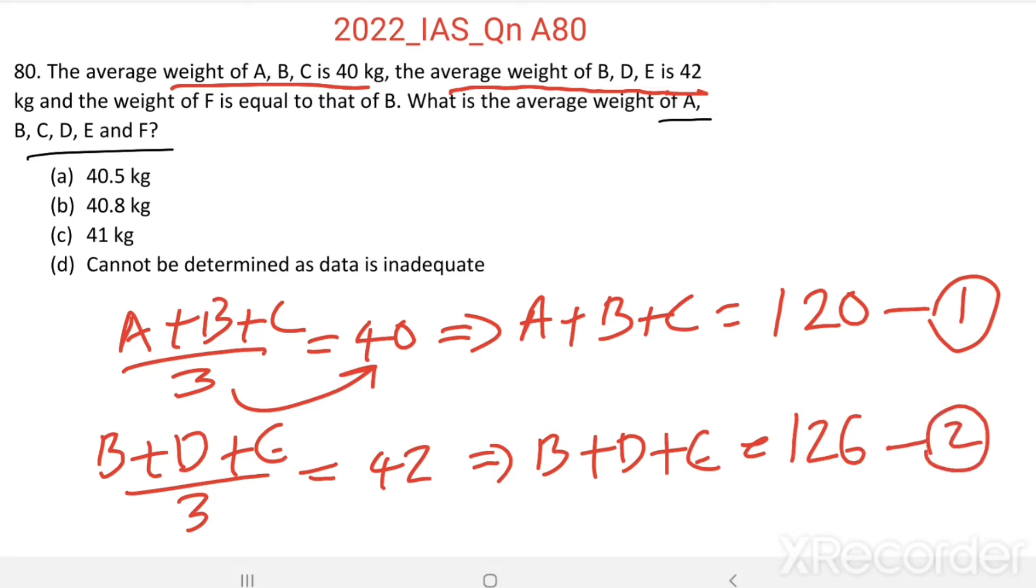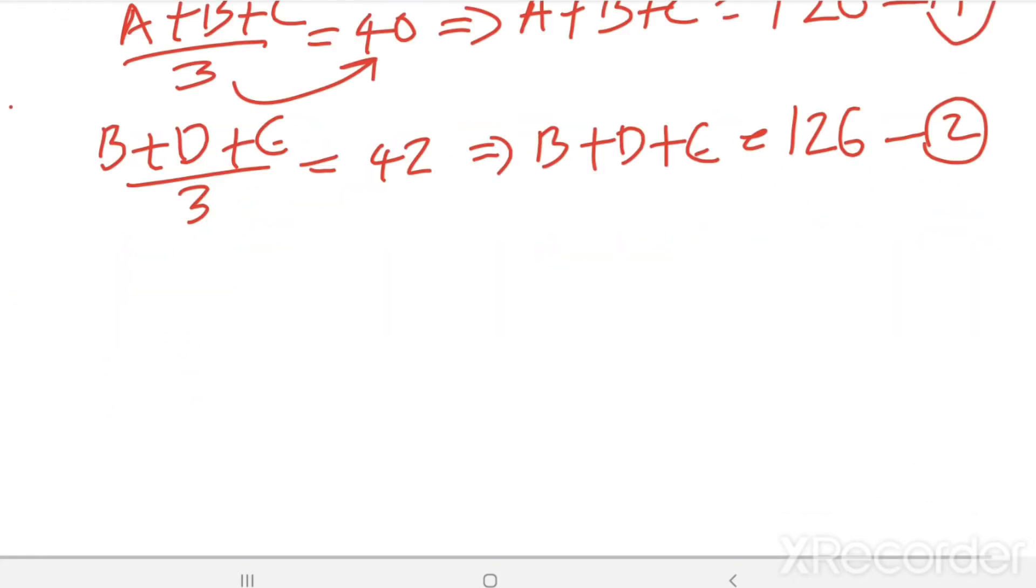Then, it is given that F equal to B. Weight of F equal to that of B. Then we want to find average of A, B, C, D, E, and F.